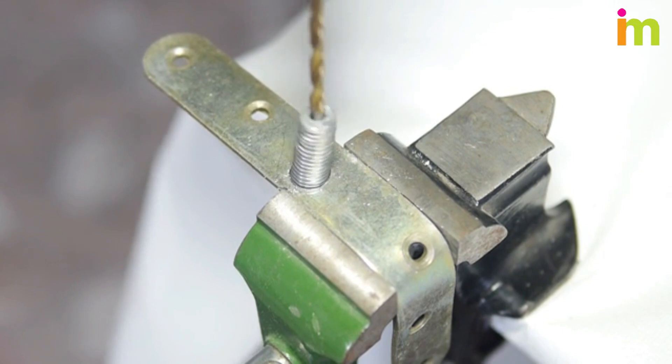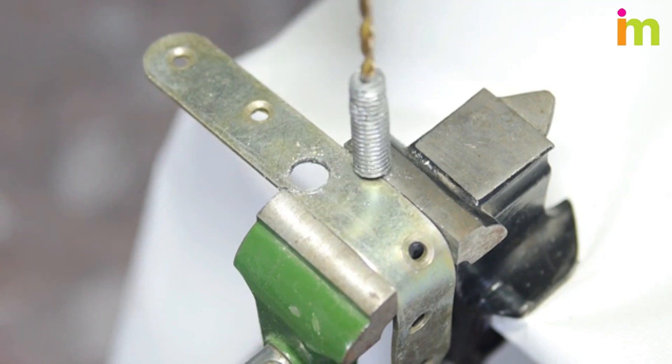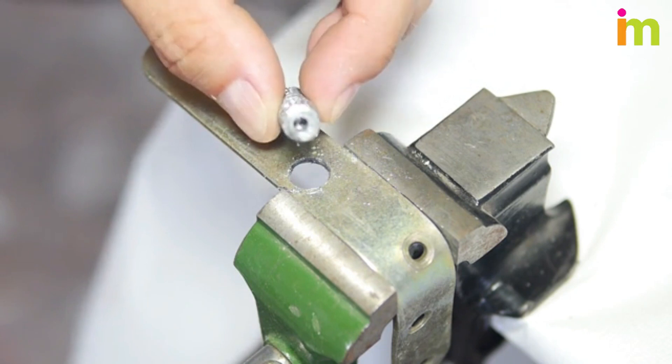Continue turning the extracting tool counterclockwise until the broken bolt has been completely removed from the surface in which it was embedded.